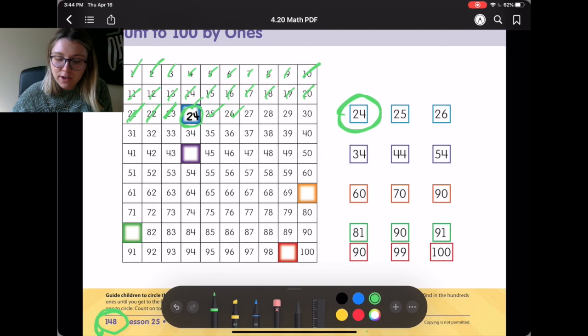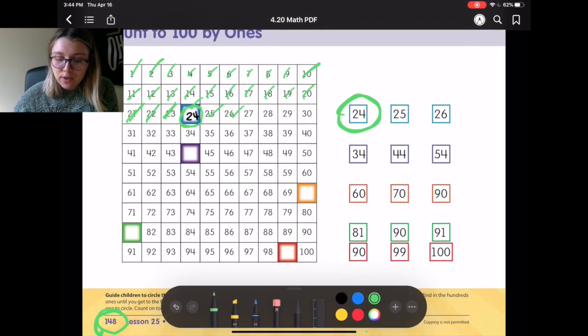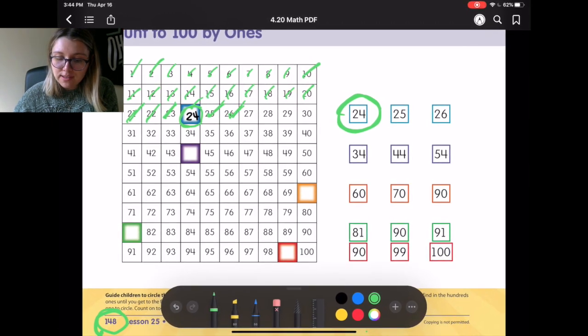We'll start at 25 and we're going to figure out what this purple box is going to be. So, we have 25, 26, 27, 28, 29, 30, 31, 32, 33, 34, 35, 36, 37, 38, 39, 40, 41, 42, 43.